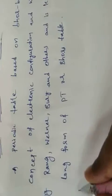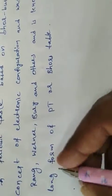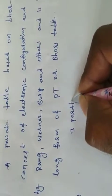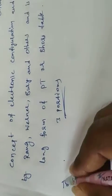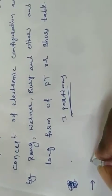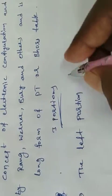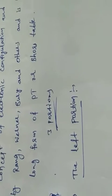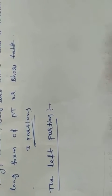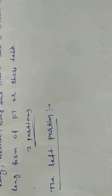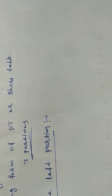The long form of the periodic table has three portions. One is the left portion. On the extreme left, the left side portion contains groups one and two — that is the first-A and second-A groups. These include alkali and alkali earth metals.